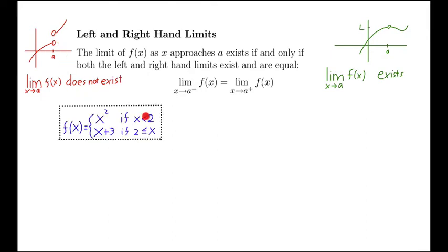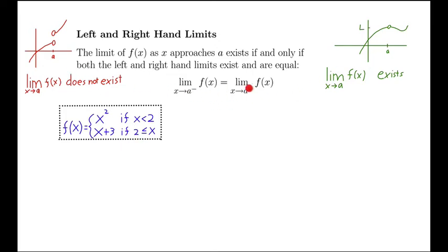Let's look at an example. It's a piecewise function — one thing if x is less than two, a different thing if x is greater than or equal to two. To figure out which case we're in, we take the limit from the left and the limit from the right and see if they're the same.